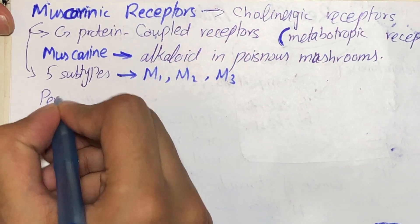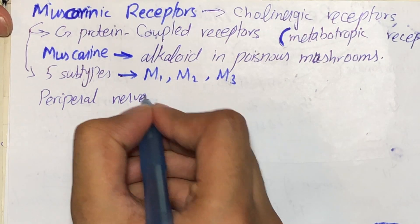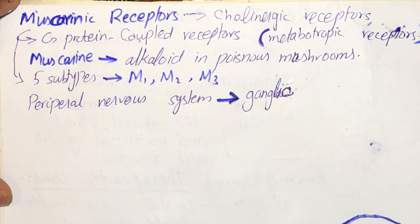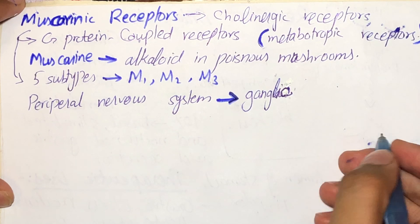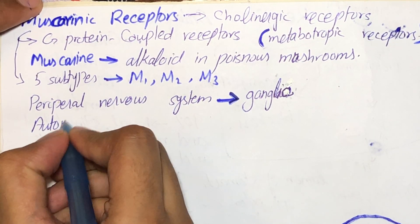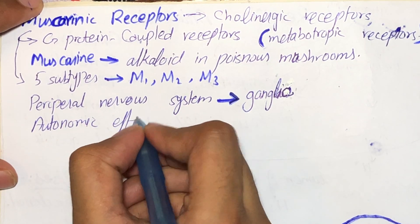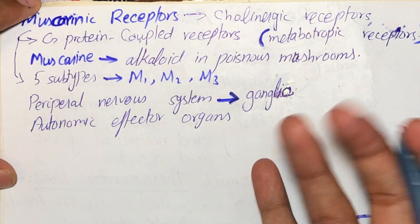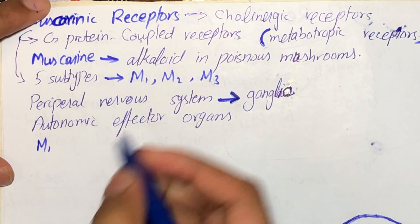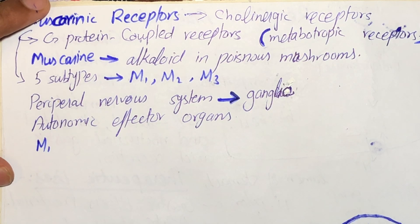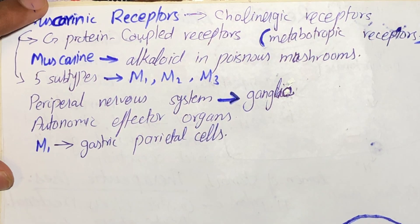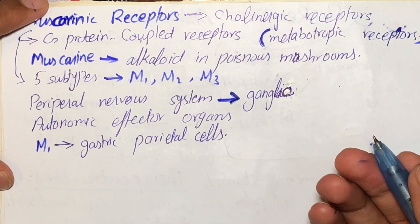These receptors are present on the peripheral nervous system — specifically on the ganglia of the peripheral nervous system. They are also present on autonomic effector organs, which can be the heart, smooth muscles, brain, or exocrine glands. M1 is present on neurons and also on gastric parietal cells — the parietal cells in the mucosal lining of the stomach that are involved in secretion of H⁺ ions.